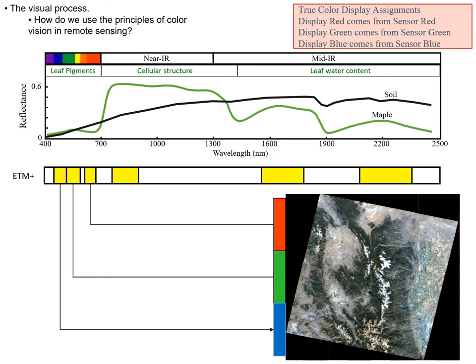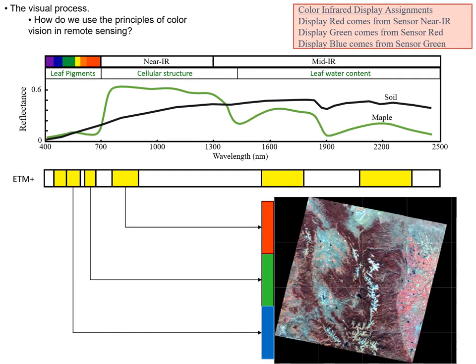True color is not necessarily what we want when examining images. Another common type is the color infrared image. In this image, the blue we're seeing is actually the green band recorded by the sensor; the red band is displayed as green; and the near-infrared band is shown as red. All the areas appearing red have high reflectance in the near-infrared, and as shown in the diagram above, vegetation has high near-infrared reflectance. So everything appearing red is actually bright in near-infrared.